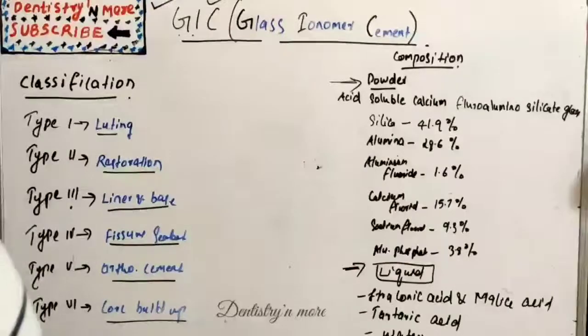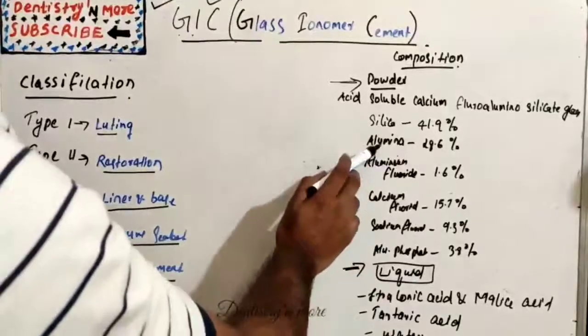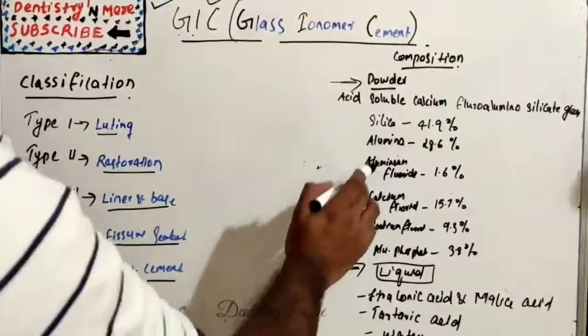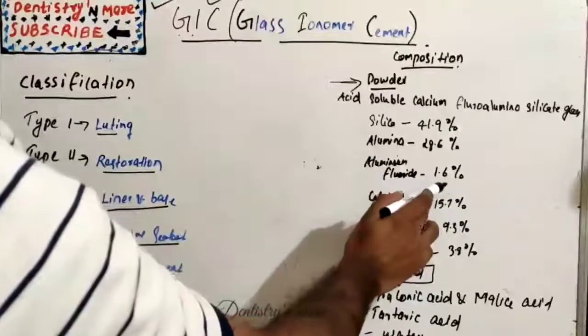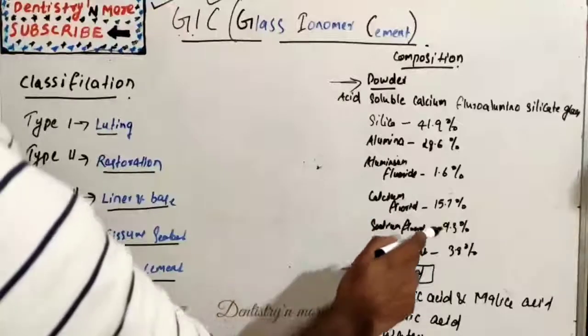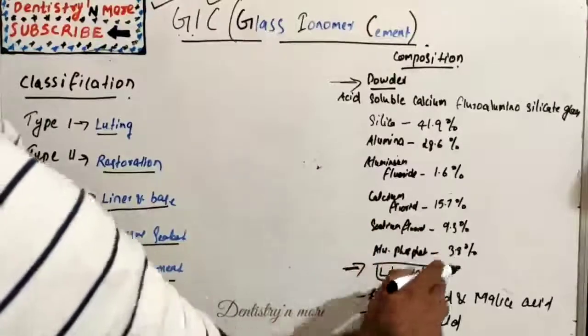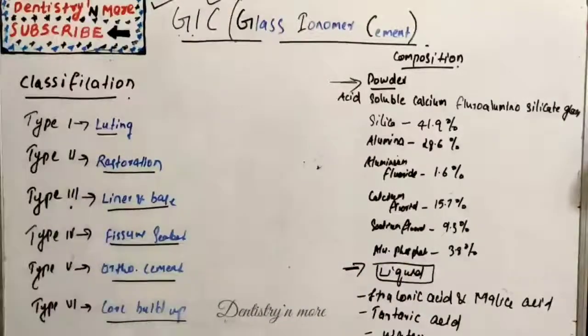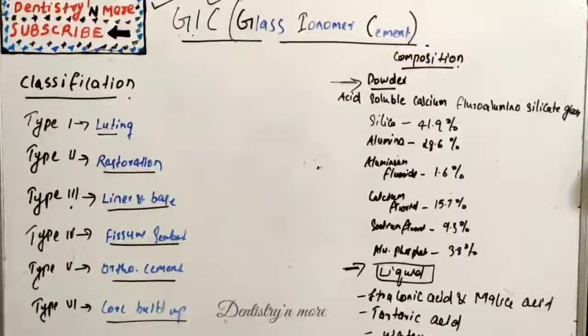The powder includes silica 42%, alumina around 29%, aluminum fluoride around 1.6%, calcium fluoride 15.7%, sodium fluoride 9.3%, and aluminum phosphate 3.8%.